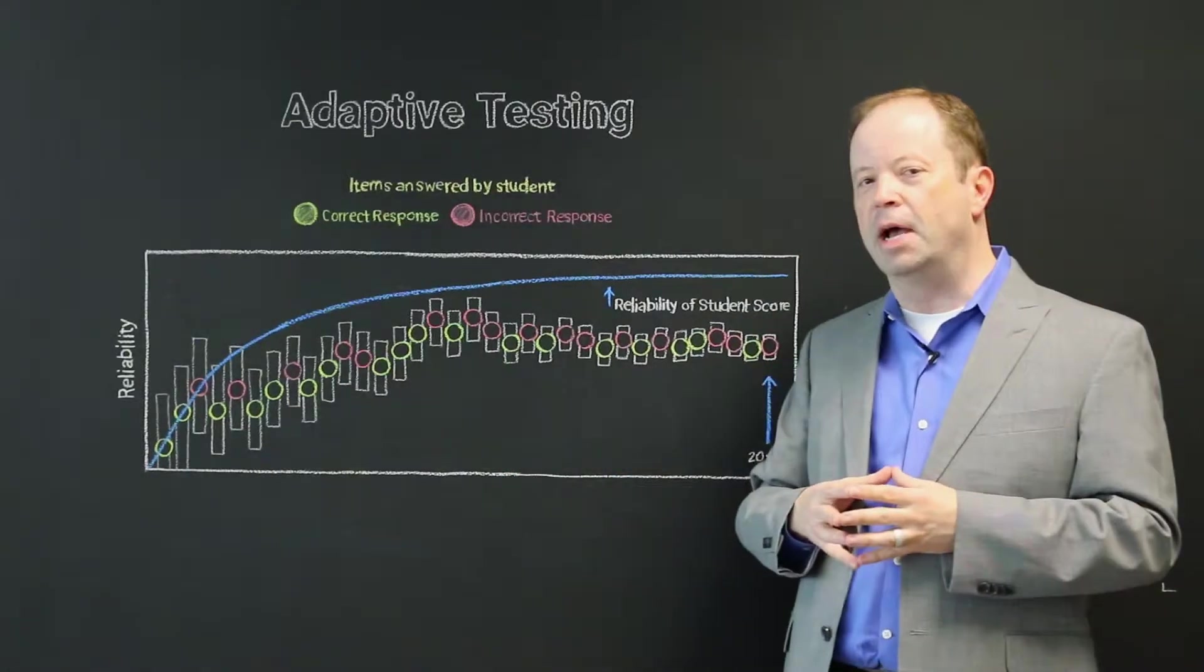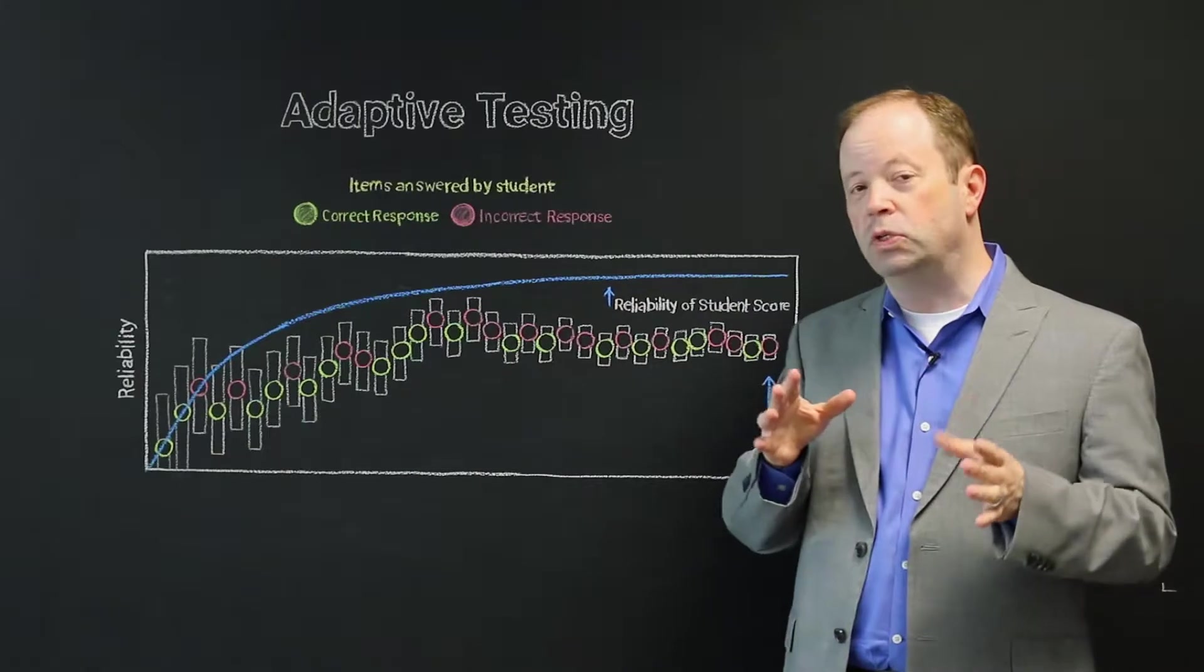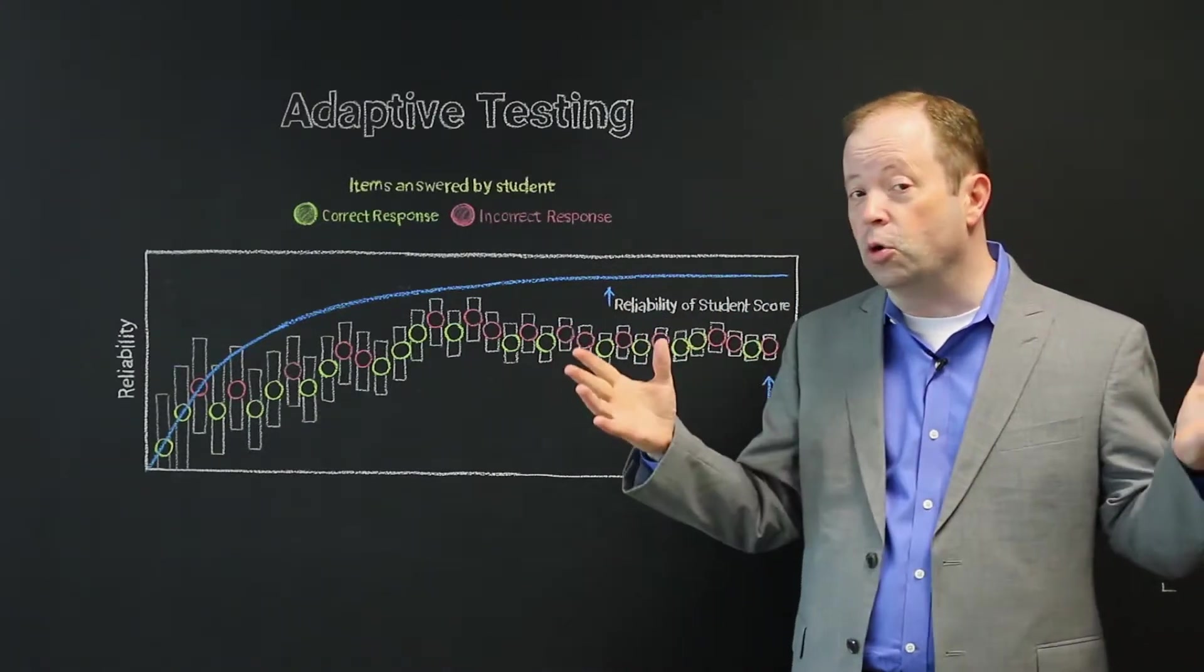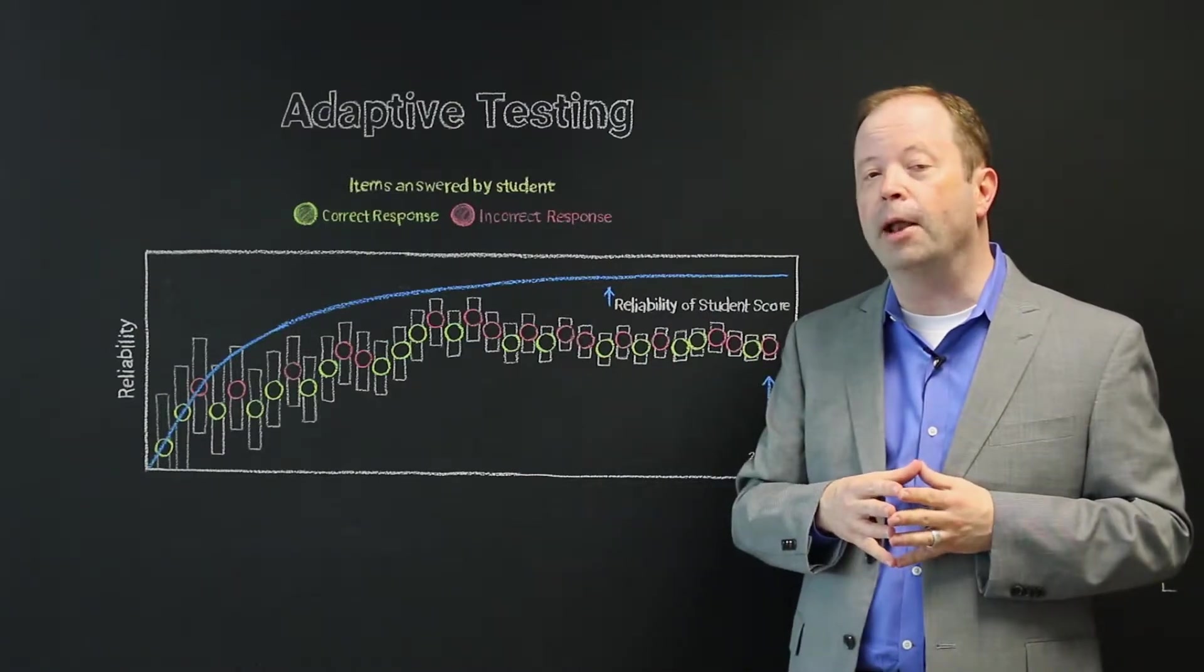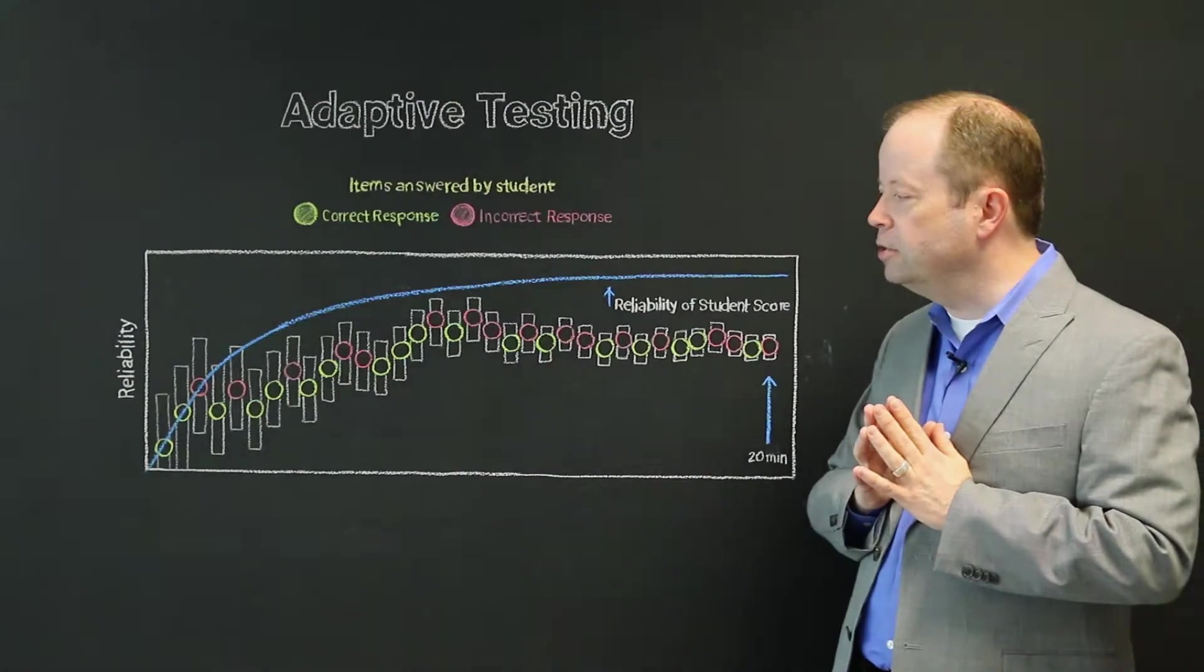When I ask some folks about adaptive testing, what they say is, I know that what it means is that essentially when a student gives a correct answer, they get a harder question, and when they give an incorrect answer, they get an easier question, and that is a really good way to think about it. But there's actually several other things going on that I would like to point out to you.